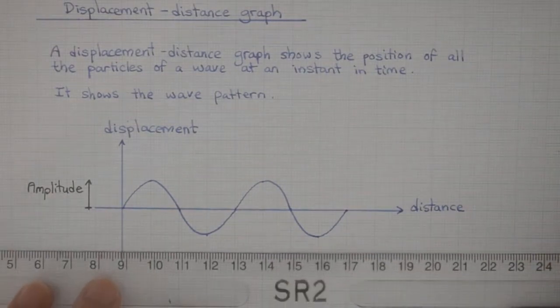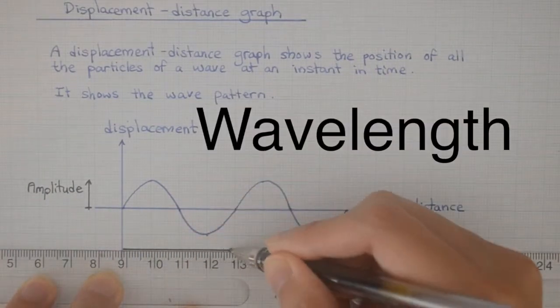Another quantity that we can measure from a displacement-distance graph is the wavelength.